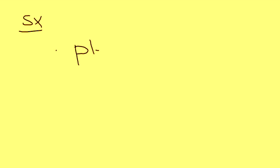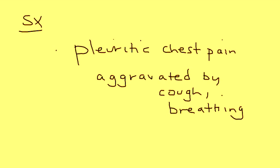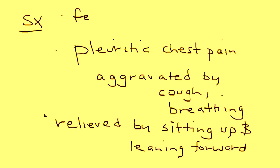Now let's talk about the symptoms — how would a patient present? Pleuritic chest pain is the hallmark presenting feature. And unlike the chest pain involved in MI, this chest pain is aggravated by movement, cough, or breathing. This type of chest pain is relieved when the person sits up and leans forward. Other nonspecific symptoms include fever, chills, and difficulty breathing — dyspnea.